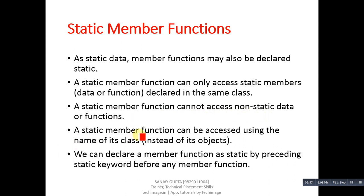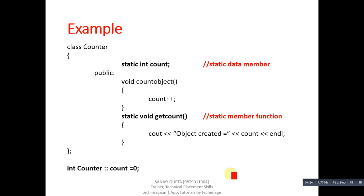A static member function can be accessed using the name of its class without creation of any object. So you can call a static member function using the class name, and for this purpose you don't have to create any object. We can declare a member function as static by preceding the static keyword before the member function declaration.